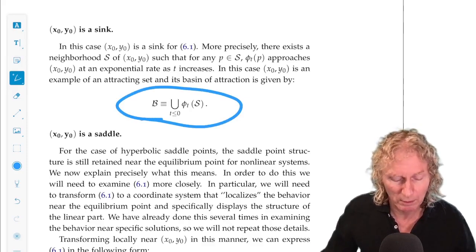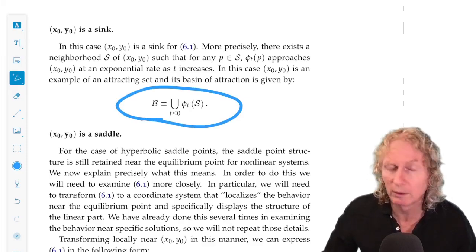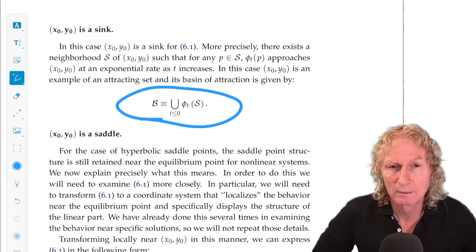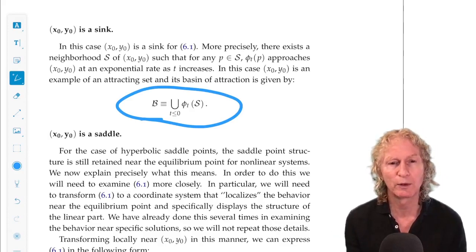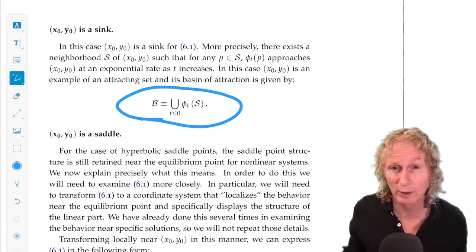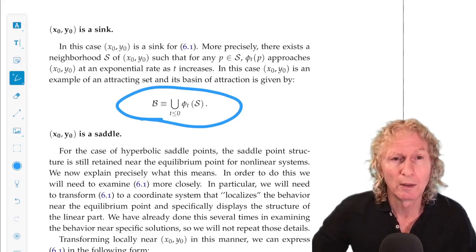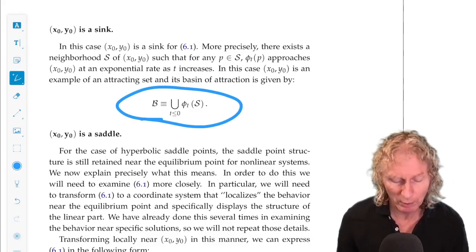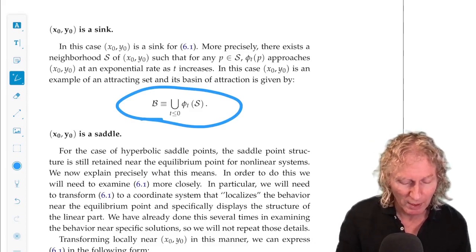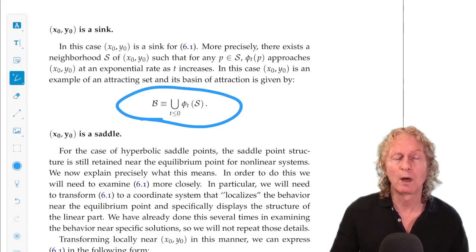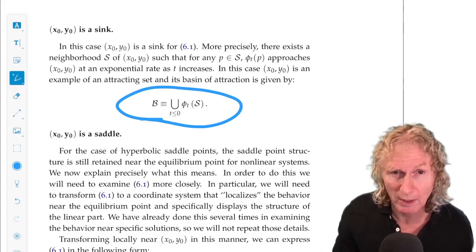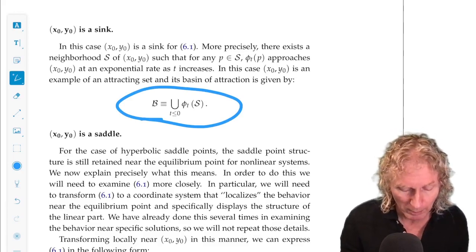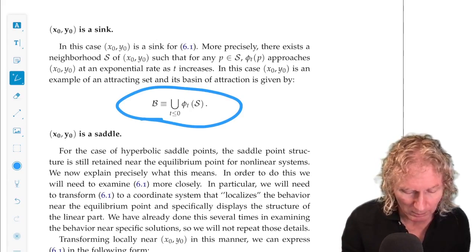Now, when I show students this the first time, they're a little bit puzzled, understandably. So, what does it mean? Take our neighborhood S. That's the neighborhood so that all points in that neighborhood actually approach, at an exponential rate, the equilibrium point (x_0, y_0). So, what do we do? I'll say it in a couple of ways. We let S evolve under the flow in backwards time for all time, and we take the union over all backwards time.